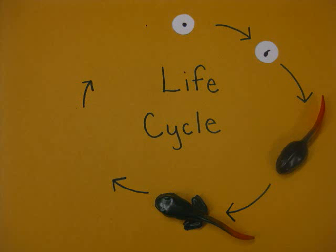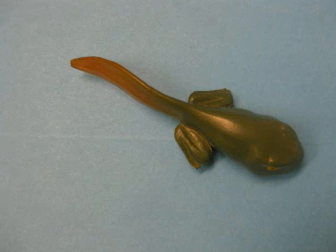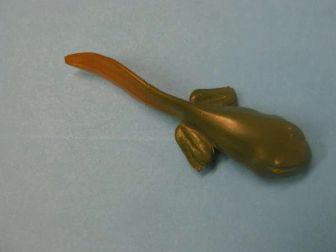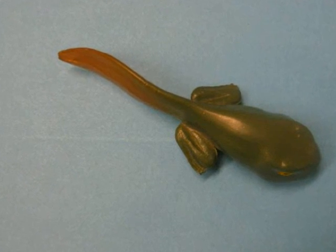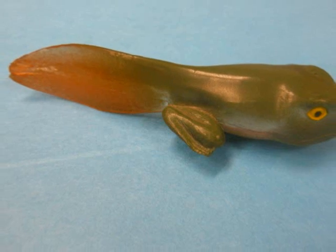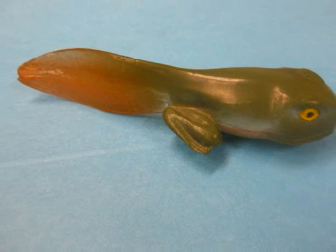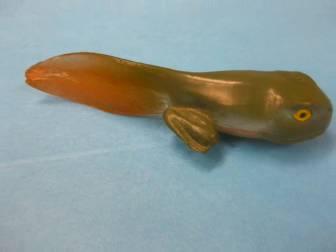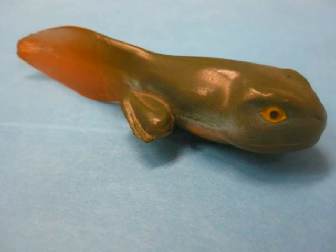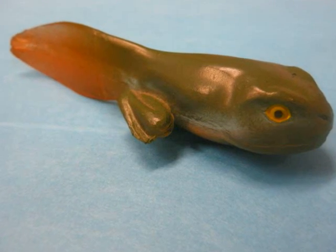The fourth stage is the beginning of the changing of the tadpole. In this stage, the hind legs grow first. The tail starts to get smaller and lungs begin to develop.